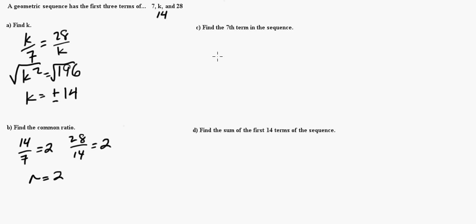Now, in order to find the 7th term of the sequence, remember our formula here. We go the nth term of a geometric sequence is the first term times the common ratio to the n minus 1 power. So, if we want to find the 7th term, we would do the first term, which is 7, times the common ratio, which is 2. We just found that. And then, n minus 1 would be 7 minus 1, which would be 6.